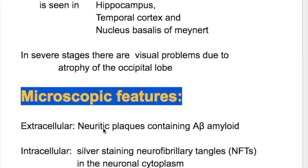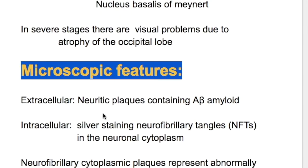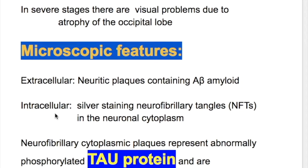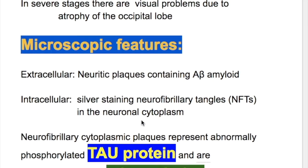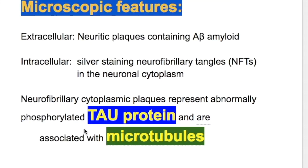What are the microscopic features in Alzheimer's disease? They are divided into extracellular and intracellular findings. Extracellularly, there are neuritic plaques containing A-beta amyloid, and intracellularly, silver staining reveals neurofibrillary tangles found in the neuronal cytoplasm.